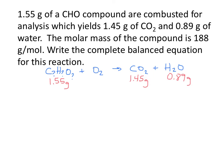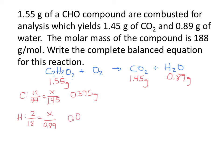First, let's find the mass of carbon in 1.45 grams of CO2. Carbon is 12 out of a total 44 for CO2, so how much is that out of 1.45? Cross-multiply and divide and you get 0.395 grams for carbon. For hydrogen, it's 2 out of a total of 18 for water, so how much would that be out of 0.89? Cross-multiply and divide and you get 0.09889 grams.